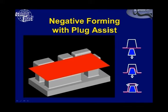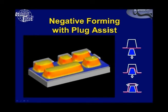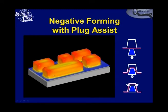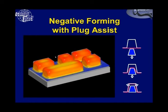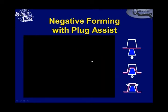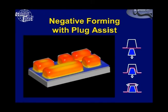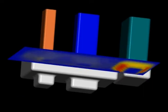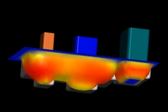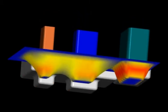T-Sim can also handle plug-assisted forming. Here we have negative forming with a lower plug assist — the plug pushes the material into the cavity and then the vacuum completes the forming process. T-Sim gives high graphic priority to the sheet, so you cannot really see the cavity on the upper side until the end, when it becomes evident where the cavities are. Each tool can have independent motion, and we can have plug-assisted forming with up to 20 independently moving tools.